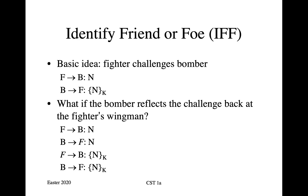The fighter says to the bomber: here's my random challenge N. The bomber then sends back to the fighter's wingman the same challenge N. The wingman, if he's got his IFF system switched on, gives a response, and the bomber then reflects the response back to the fighter. So you've got to have some means of identifying challenges that have come from your mate, and indeed challenges that have come from your own aircraft itself, because you don't want the bomber to reflect the challenge back at you and have your own equipment act as an oracle by giving the right answer.